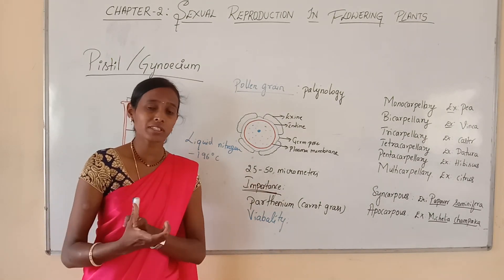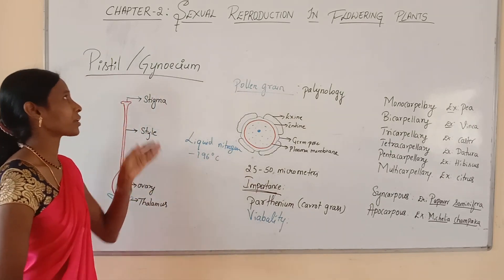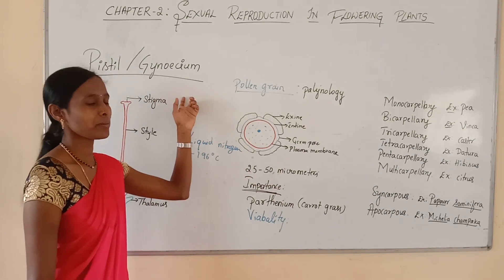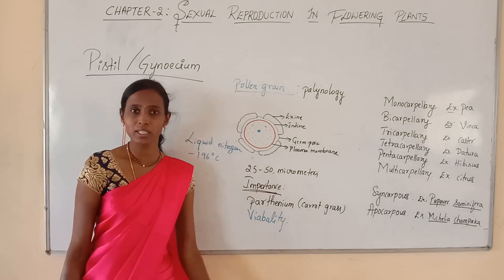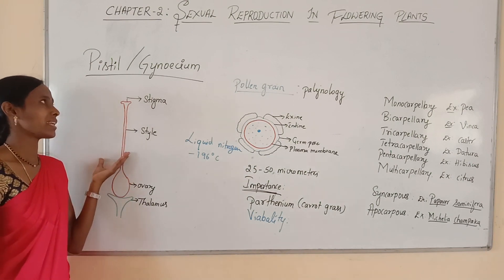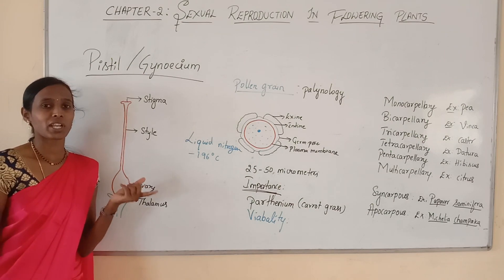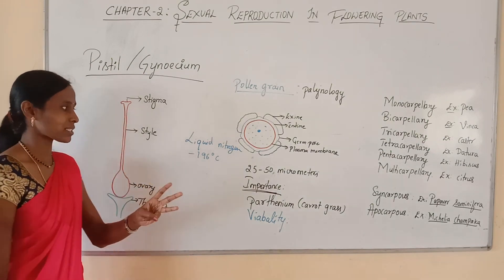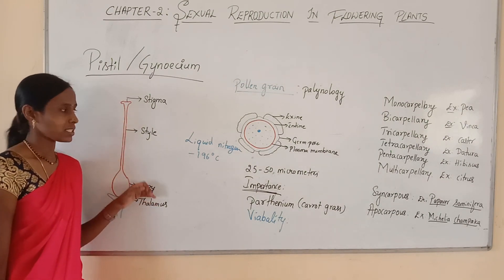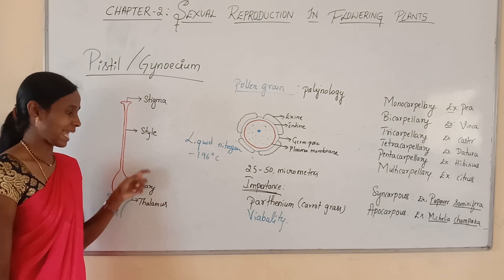The pistil or gynoecium represents the female reproductive structure of the flower. We have already discussed the male reproductive structure — the androecium or stamen. The gynoecium or pistil is usually made up of three parts: stigma, style, and ovary.